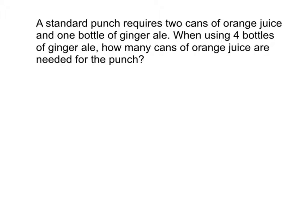So let's underline some of the information that's given to us in this problem. We know that we're making a punch, and this punch requires two cans of orange juice and one bottle of ginger ale. If we want to make more punch, we're going to add more ginger ale. So if we add four bottles of ginger ale, how many cans of orange juice are we going to need?